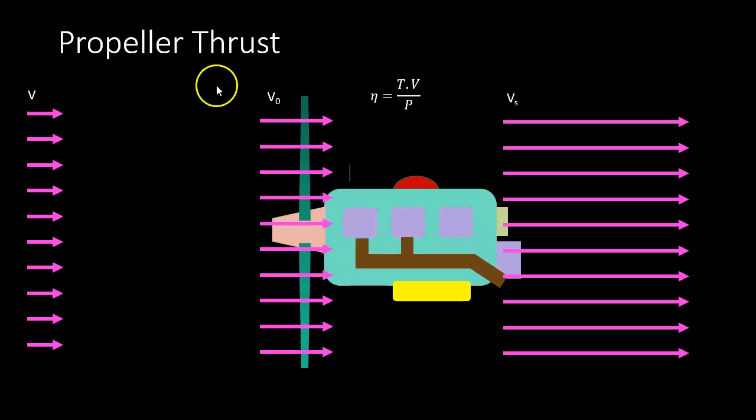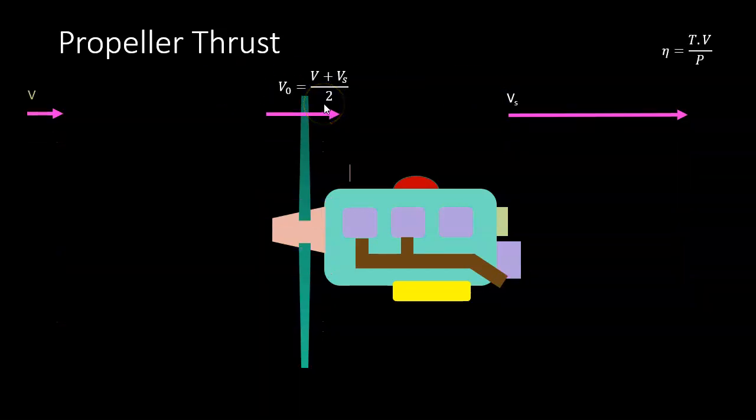The velocity, the free stream velocity V, would be the velocity of the aircraft. The velocity of air going through the disc is V0, and the velocity of slipstream air is Vs. When we looked at momentum theory, we saw that the velocity through the disc was the average of the free stream velocity plus the slipstream velocity.